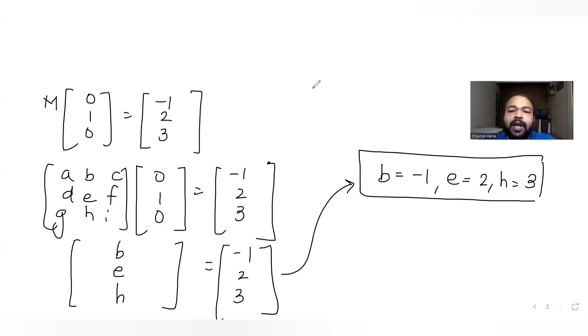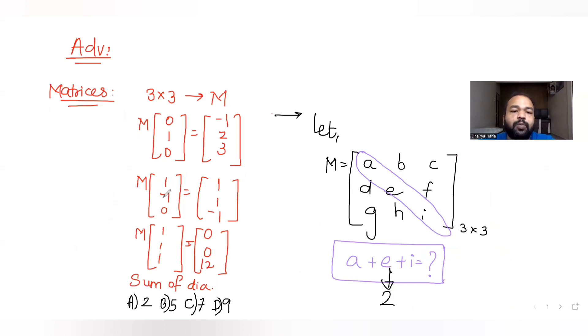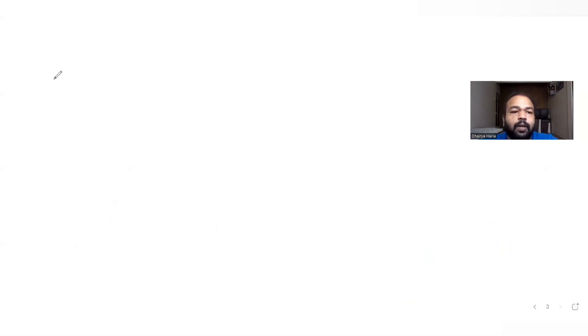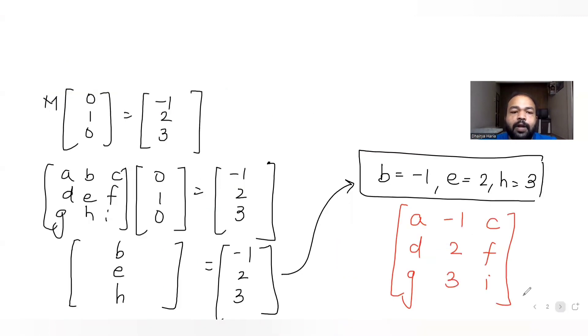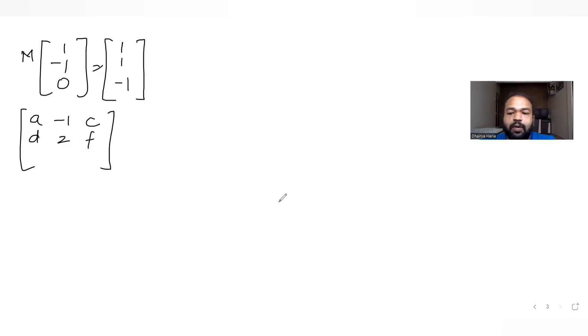Now substituting the known values b = -1, e = 2, h = 3 into matrix M, I apply the second condition: M × [1, -1, 0]ᵀ = [1, 1, -1]ᵀ. Writing out the updated matrix M with these known middle-column values and performing the multiplication.